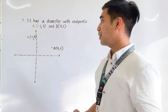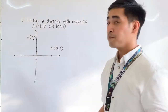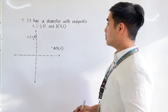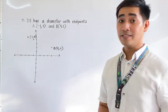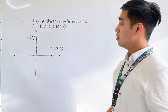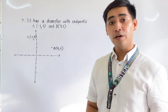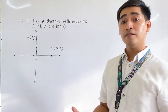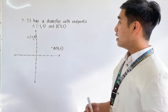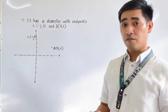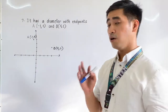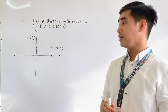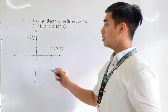For our next example, we are given a circle having a diameter with endpoints at A, negative 1 and positive 4, and B at positive 4 and positive 2. So all we have to do first is to graph the points A and B.